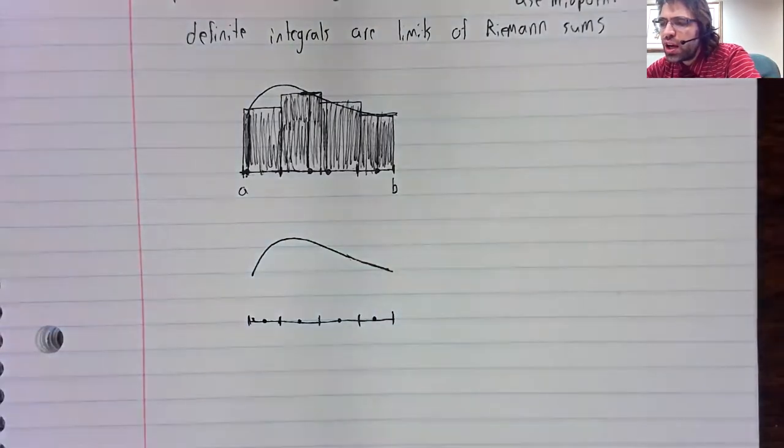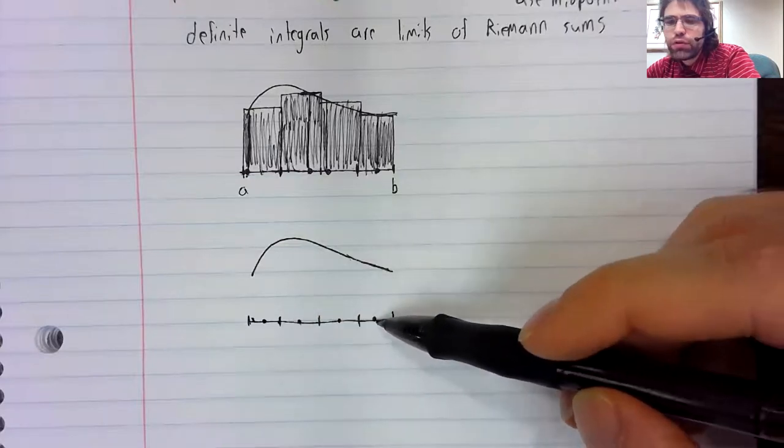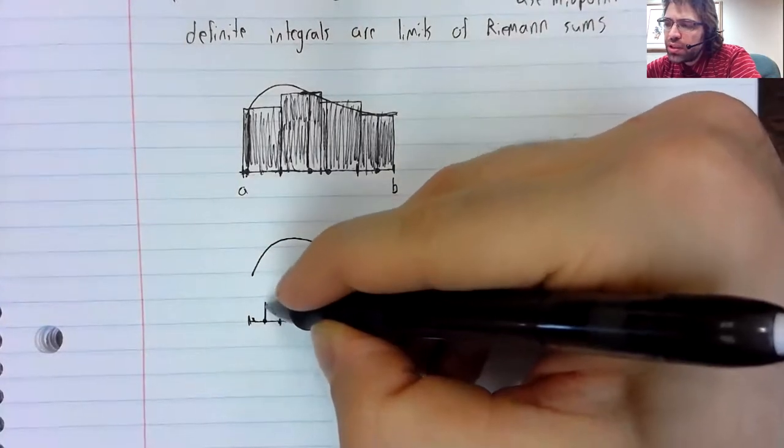And we use those subintervals to create rectangles. But this time, instead of letting these points be wherever, we make them be the midpoint.